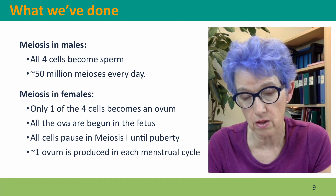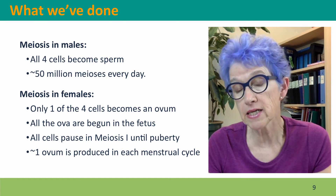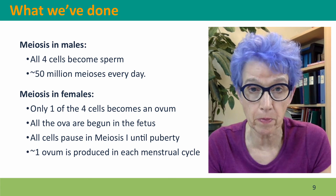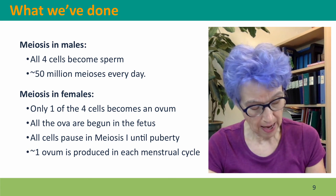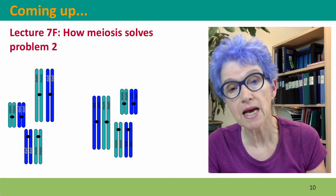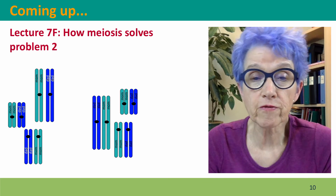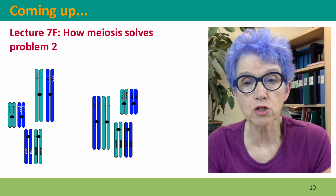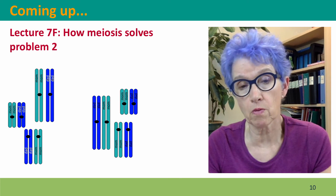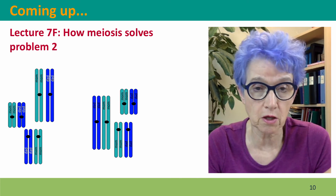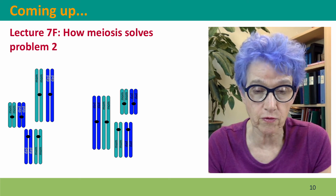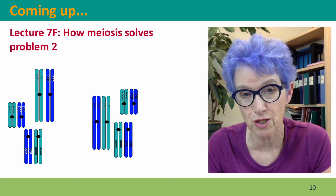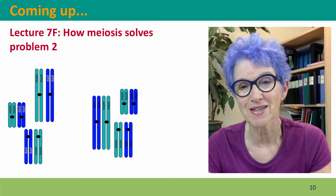Each menstrual cycle results in one completed meiosis, and the menstrual cycles eventually cease at menopause. Coming up next in lecture 7F, we're going to talk about how meiosis solves problem 2: randomizing the combinations of chromosomes that get put into the daughter cells. I hope to see you there.